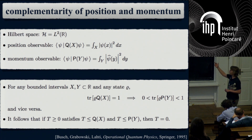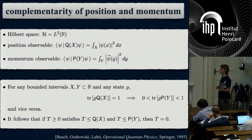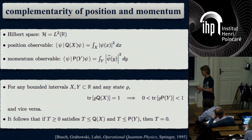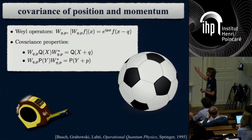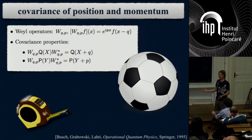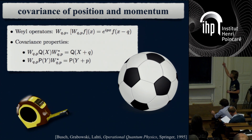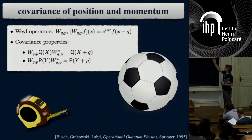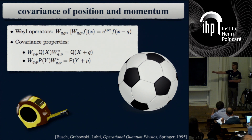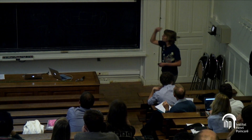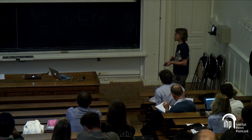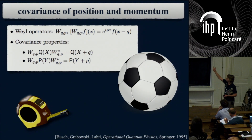Covariance is actually taken as the definition of position and momentum in some books, not only in quantum but also in classical physics. If I measure a classical particle and get, say, 5 meters, then step one meter back and measure again, I get 6 meters—my measurement results change accordingly when I move. In phase space, translations are described by Weyl operators, and covariance is written using that conjugation. So we have complementarity and covariance as ingredients.